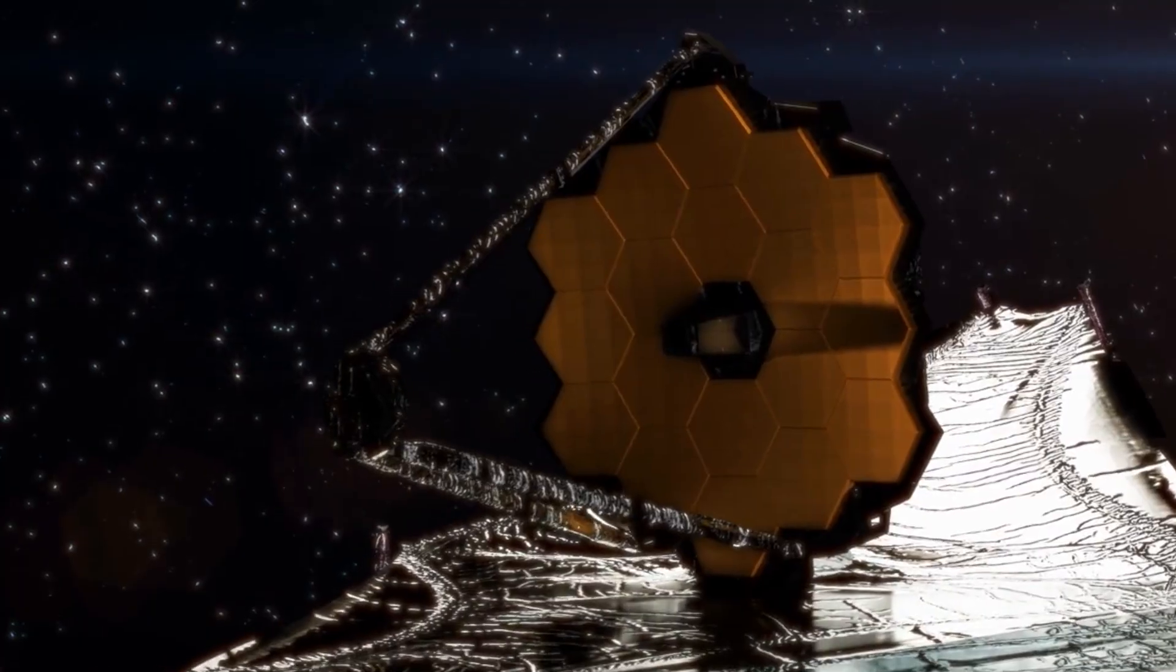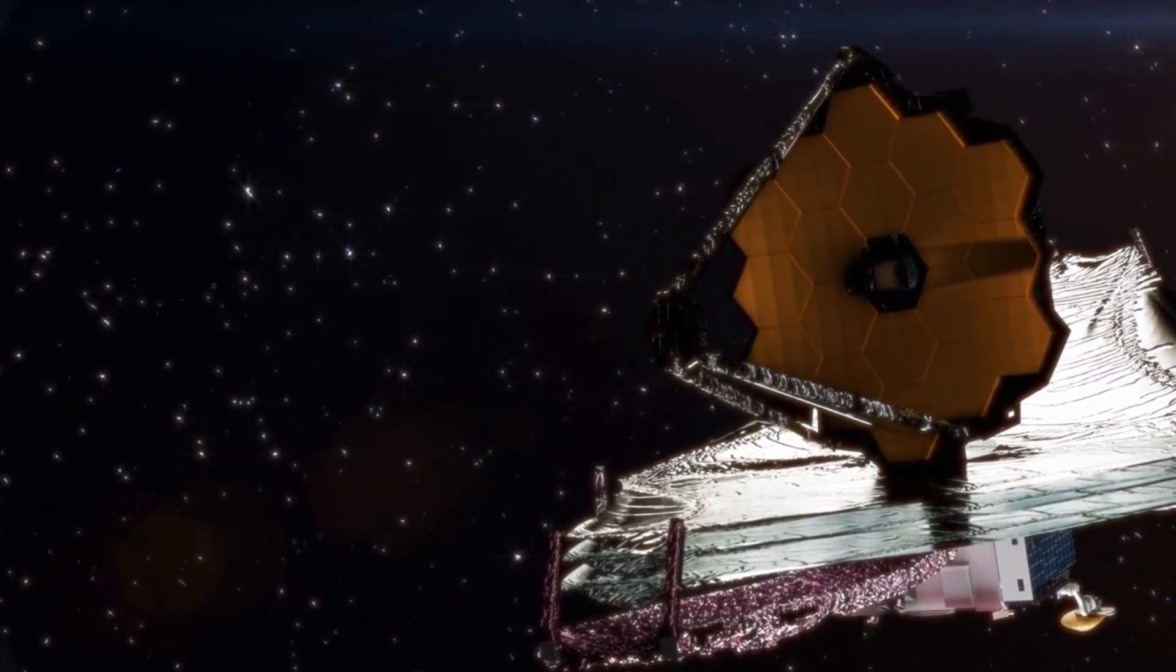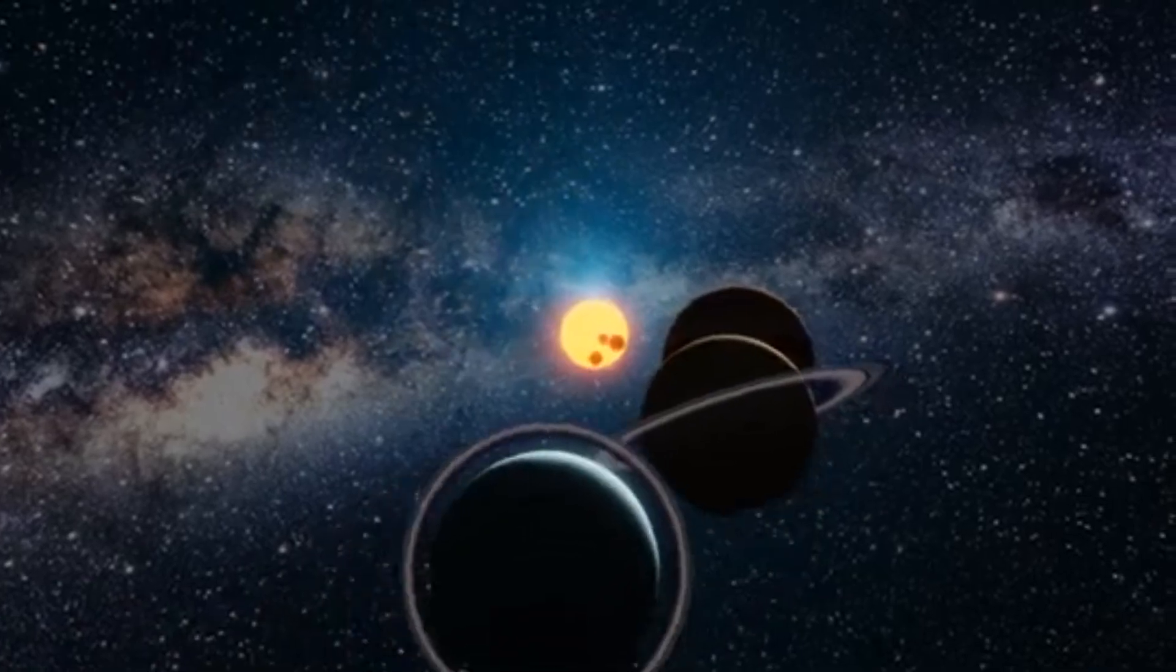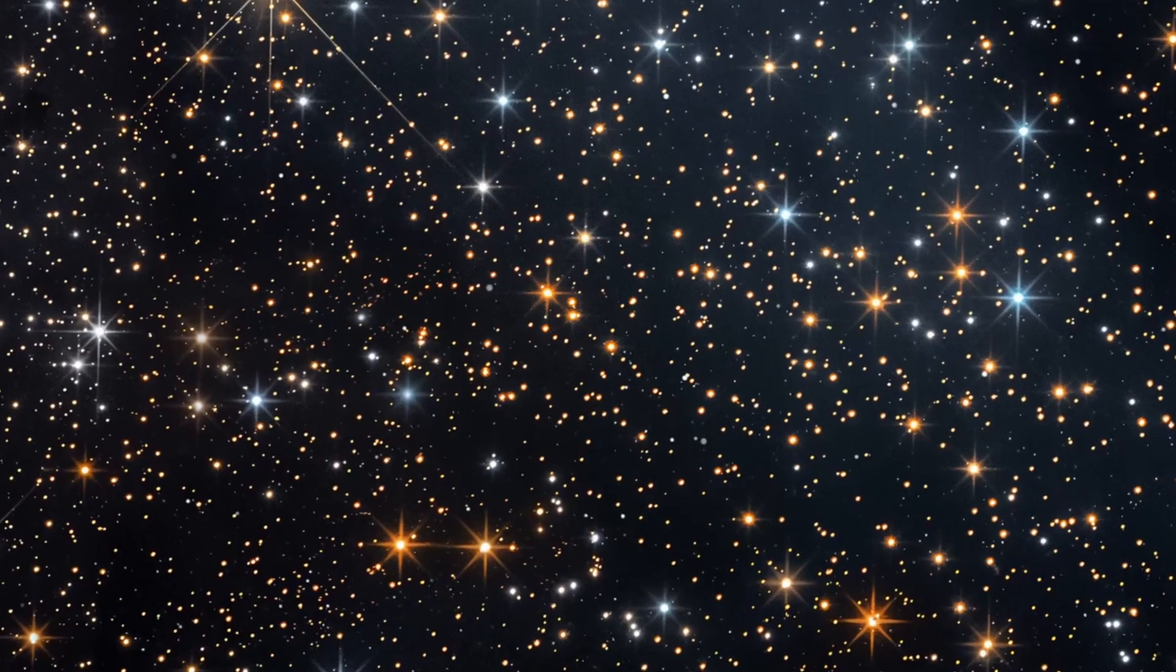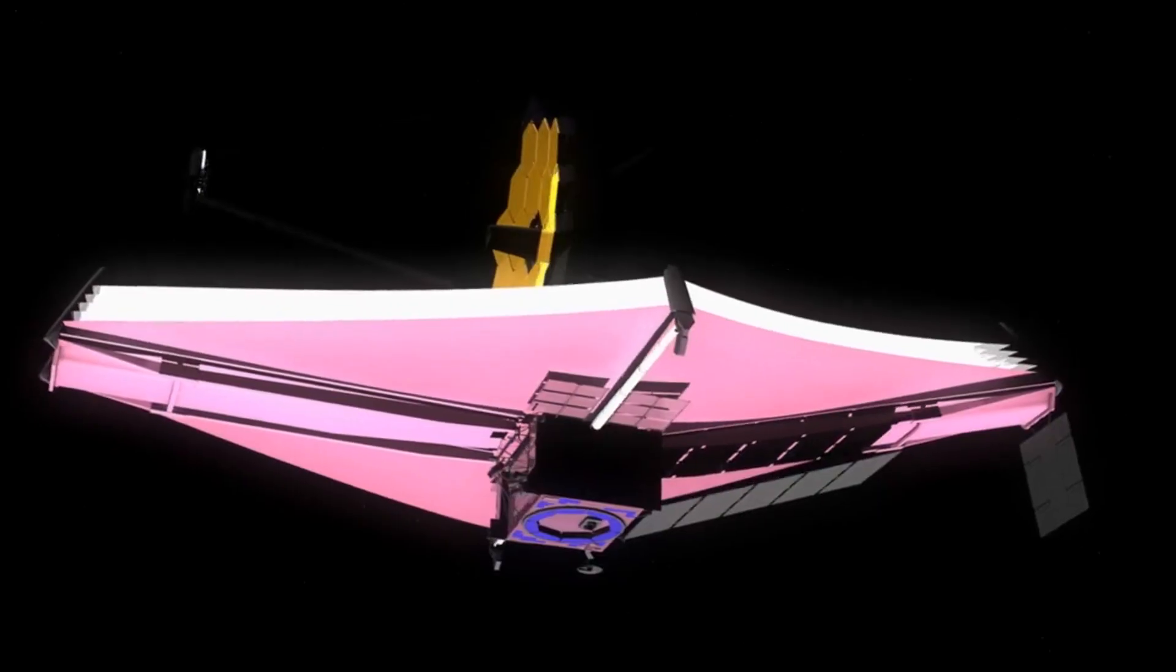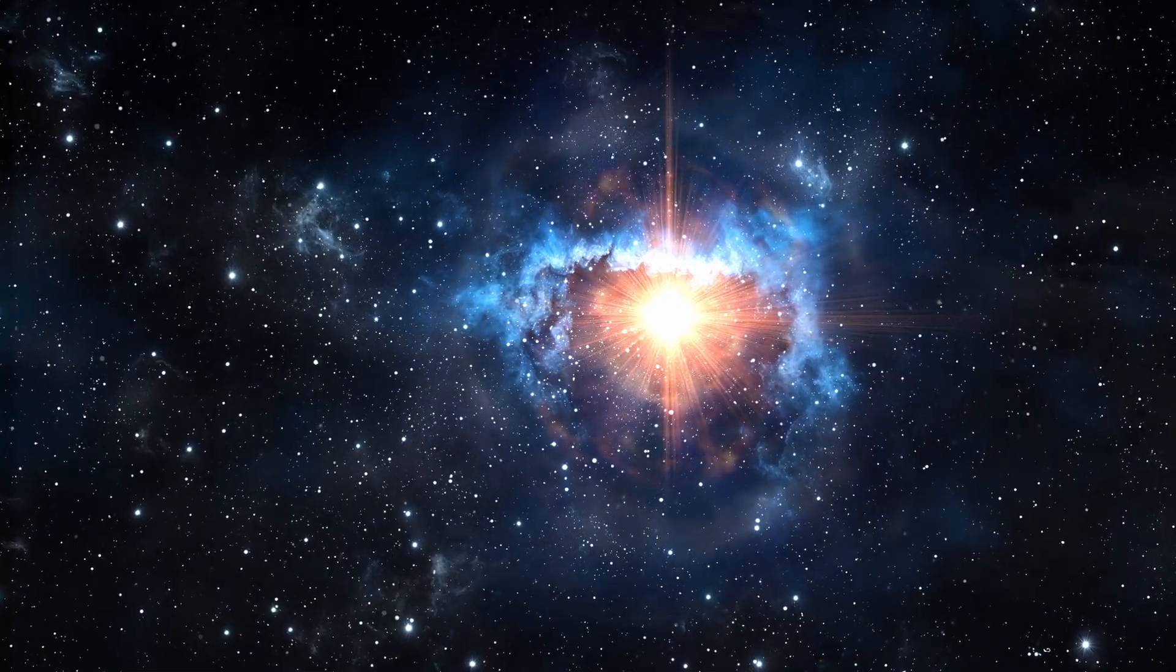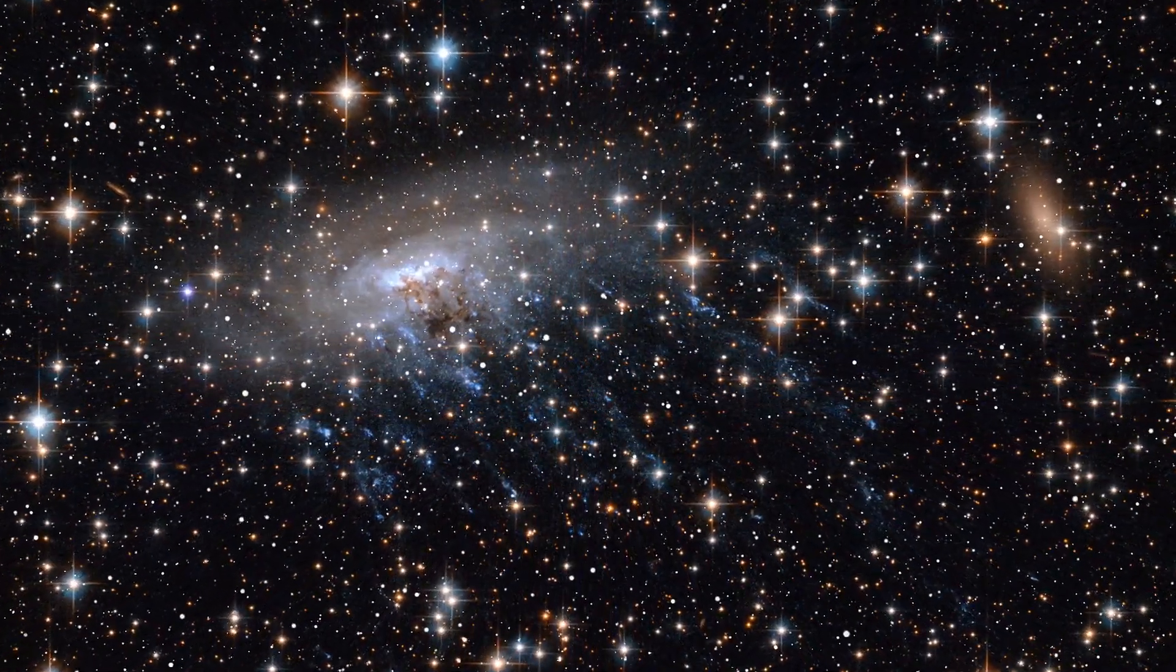Thanks to the James Webb Space Telescope, we're no longer in the dark about the atmospheres of small exoplanets. We're beginning to peel back the layers, literally, and what we're seeing is both astonishing and humbling. As Dr. Kempton says, I've waited my whole career for Webb. And now we're finally able to truly characterize these alien worlds. So what else will JWST uncover in the years ahead? Could TOI 421b just be the beginning of a much bigger story? Only time and the stars will tell.